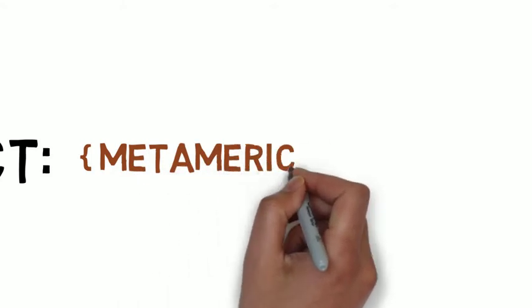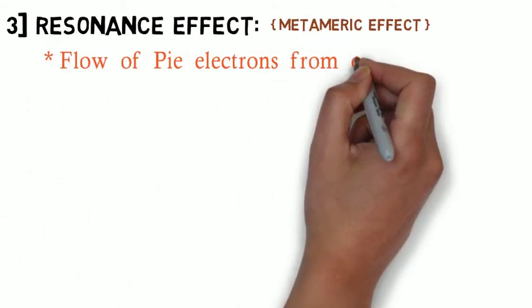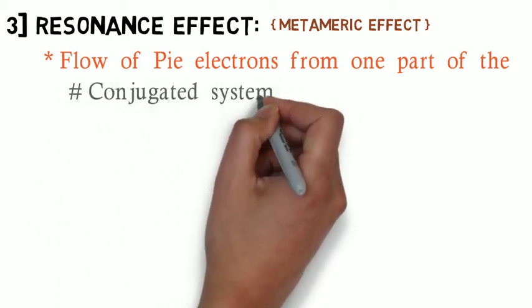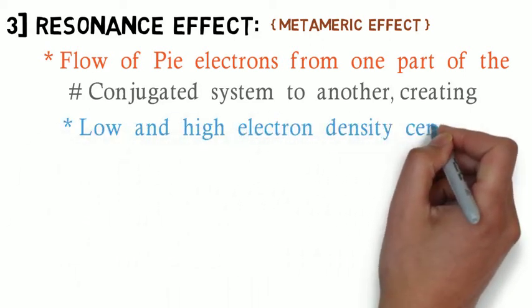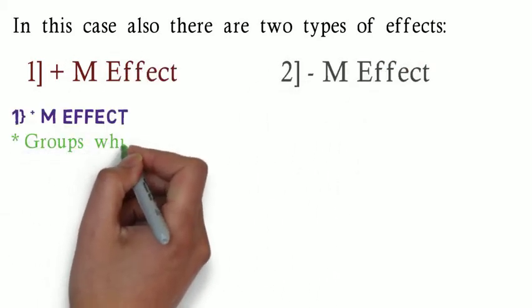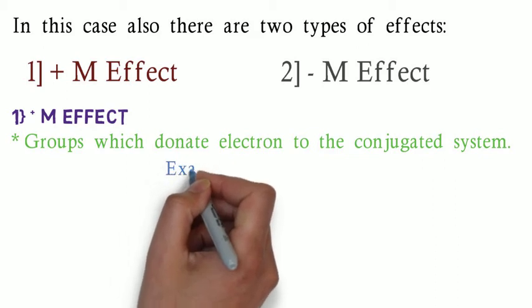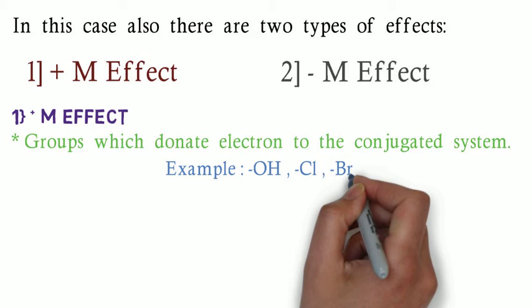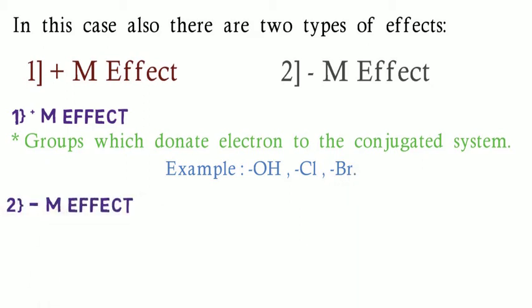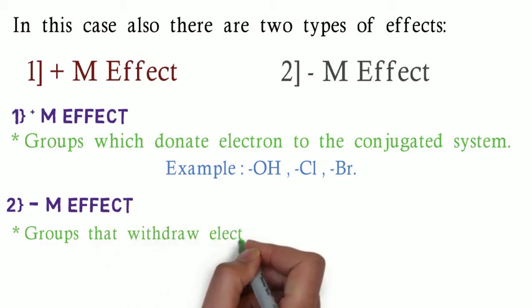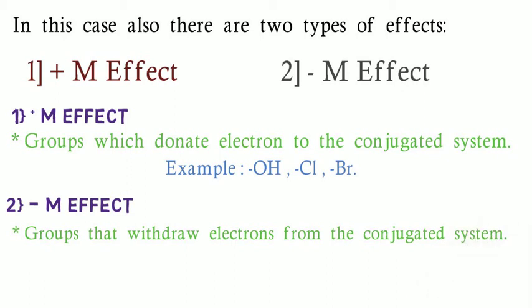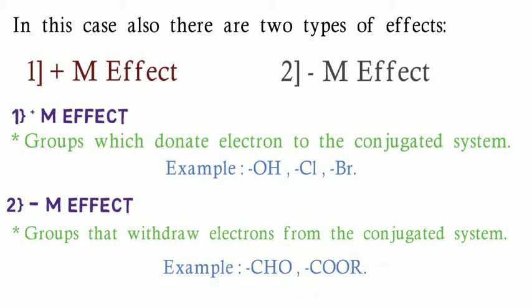The next one is the resonance effect, otherwise known as the metameric effect. It is the flow of pi electrons from one part of a conjugated system to another part of the conjugated system, creating low and high electron density centers. There are two types: plus metameric effect and minus metameric effect. Groups which donate electrons to the double bond or conjugated system are plus-M groups — examples are OH, chlorine, and bromine — and the effect is the plus-M effect. Groups that withdraw electrons from the conjugated system are minus metameric groups; examples are aldehyde, alcohol, and so on, and the effect is the minus metameric effect.